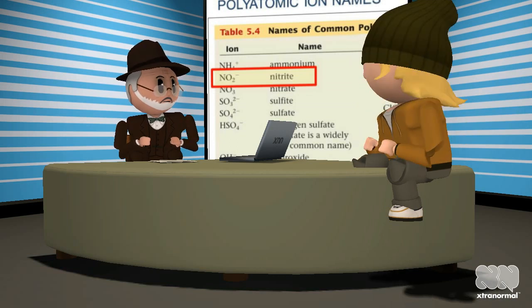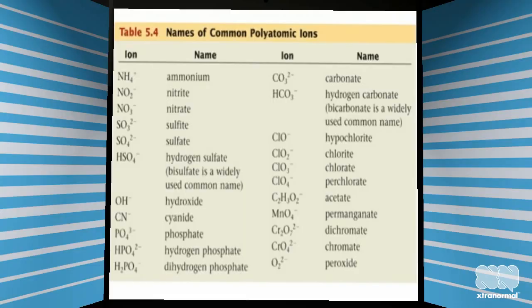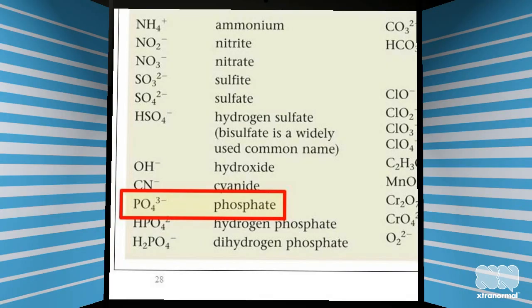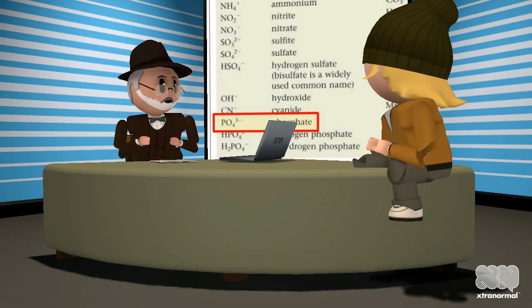That sounds pretty easy. How about another example? Sure. Try to find the name for PO4 with three negative charges. Is that the phosphate ion? Yes, that is correct. I think you got it now. And if you combine it with a metal, like calcium, you end up with calcium phosphate, super work.